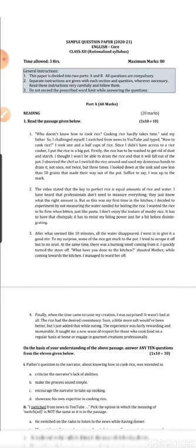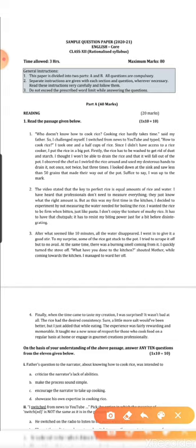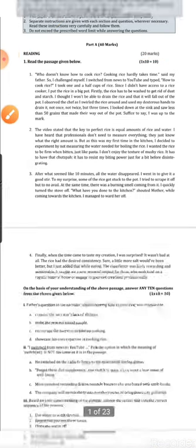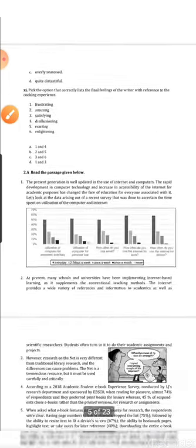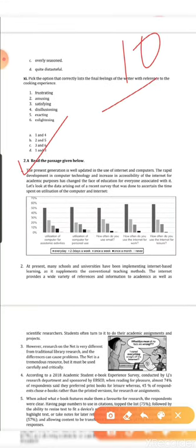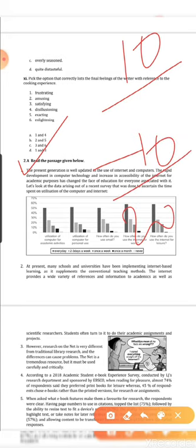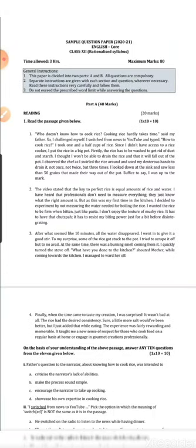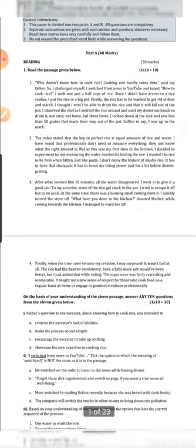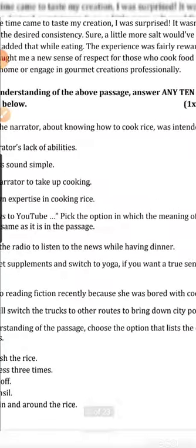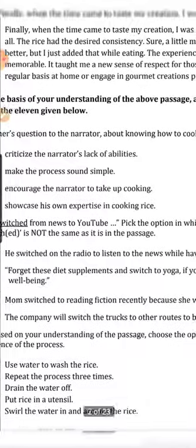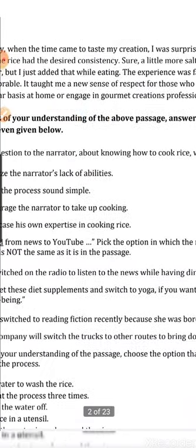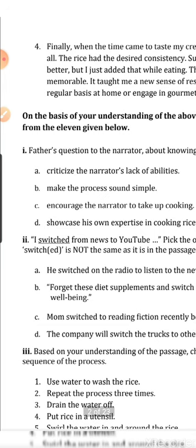In Part A, Reading Skills is coming for 20 marks with two passages — Passage 1 and Passage 2, each for 10 marks. Passage 1 is a comprehension-based passage where some facts are given and all the questions are MCQ type. Based on your understanding of the passage, you answer any 10 questions from the 11 given.